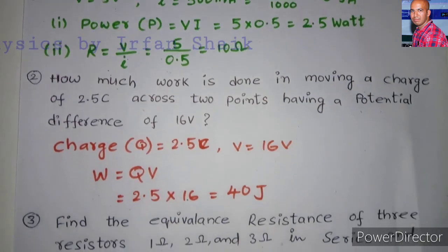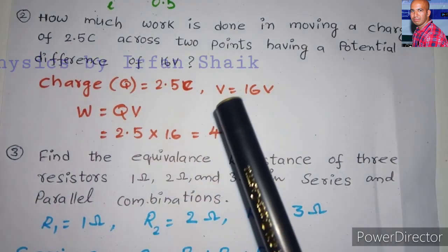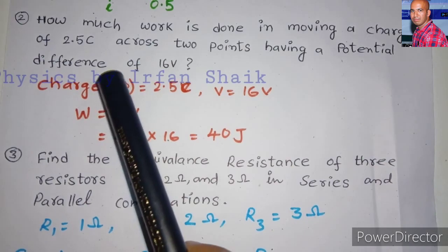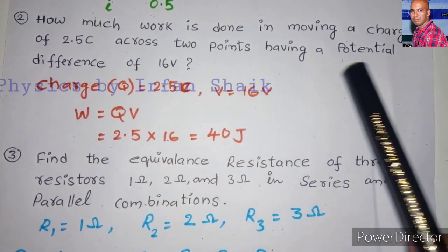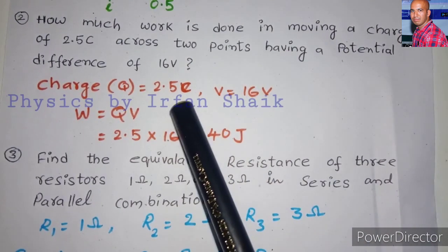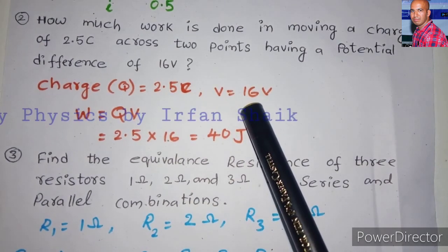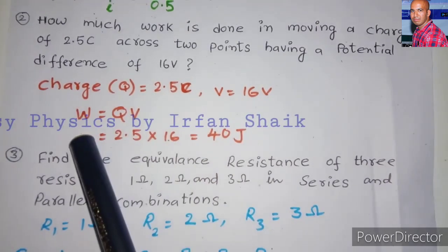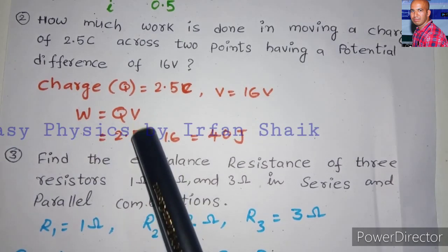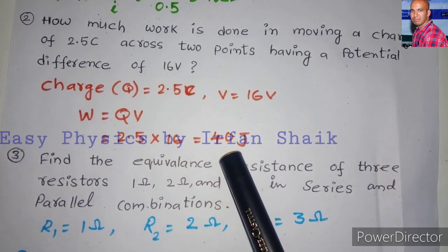Move to the second problem. How much work is done in moving a charge of 2.5C across two points having a potential difference of 16V? Here charge Q is given as 2.5C and the potential difference is 16V. We have to find the work done W. The formula is W equals QV. By multiplying these two we get the answer 40 joules.